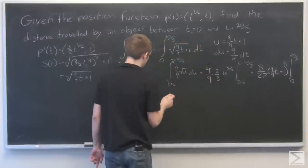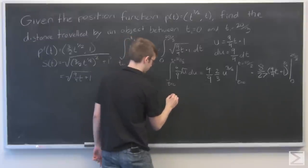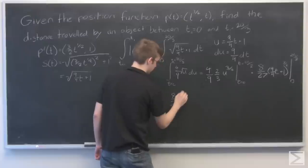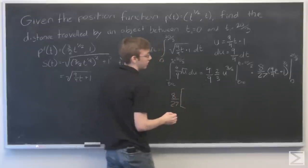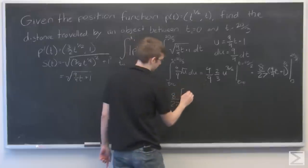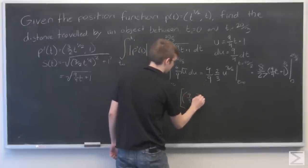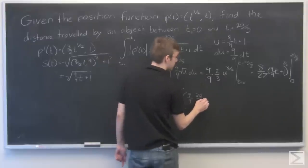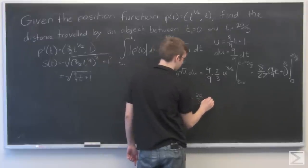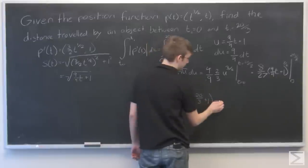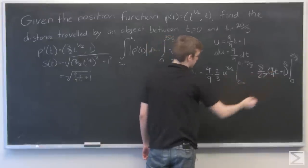So plug in 20 thirds for t down here. Everything's going to be multiplied by 8 over 27. So we'll do a bracket. Start out with 9 fourths times 20 thirds plus 1. And now we'll plug 0 in. We just get minus—that goes to 0—and we just get 1.